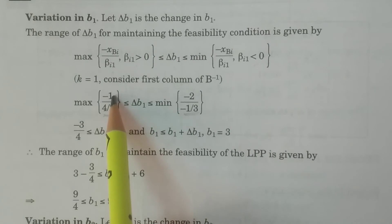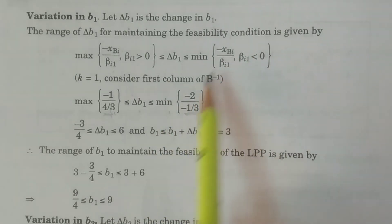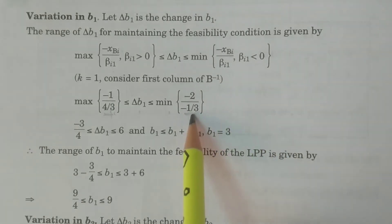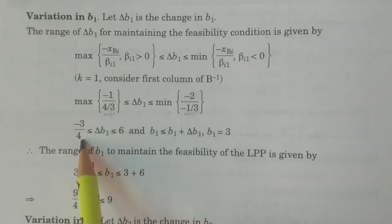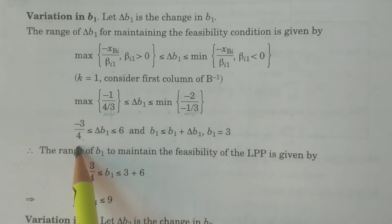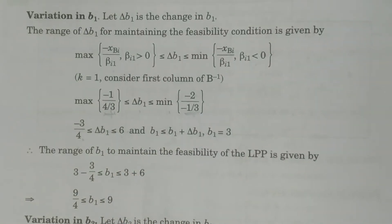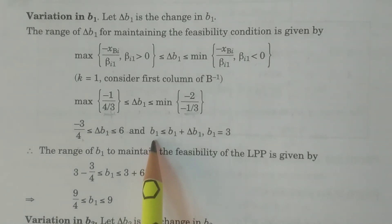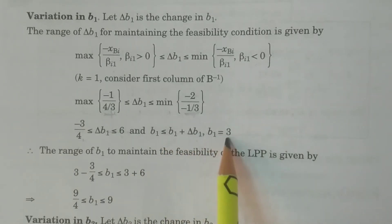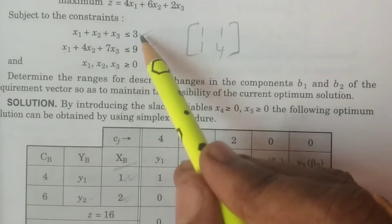So the range is: maximum of (-1 / (4/3)) — only one value — less than or equal to delta B1, less than or equal to minimum of (-2 / (-1/3)). Therefore: -1 divided by (4/3) equals -3/4, and -2 divided by (-1/3) equals 6. Therefore delta B1 must lie between -3/4 and 6. That is: -3/4 ≤ delta B1 ≤ 6. B1 is equal to 3, as clearly given by the vector B = [B1, B2] = [3, 9] — the right hand side constants.